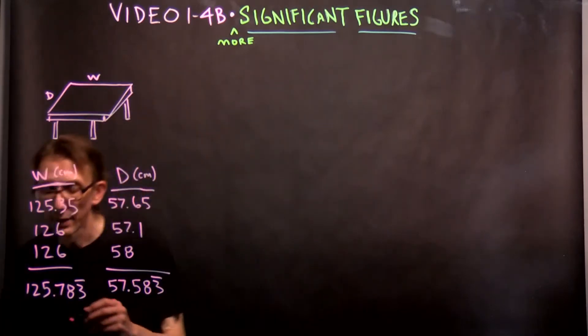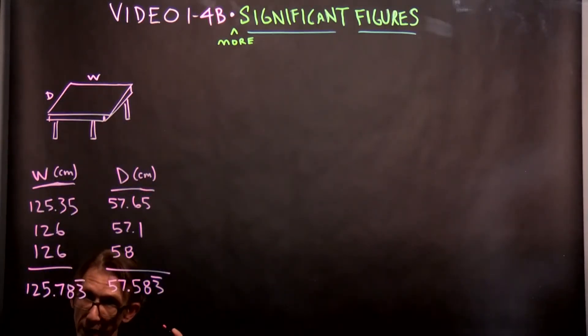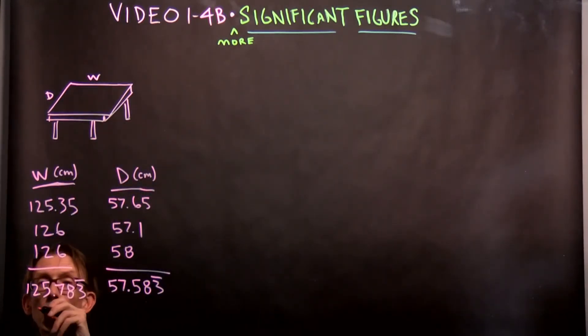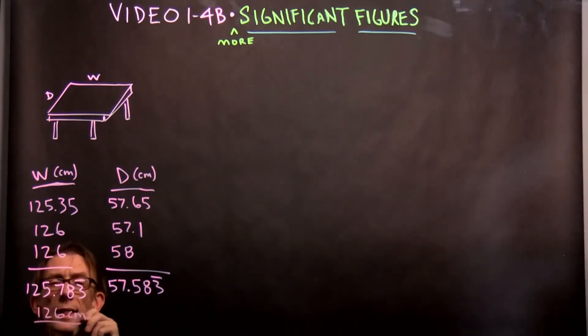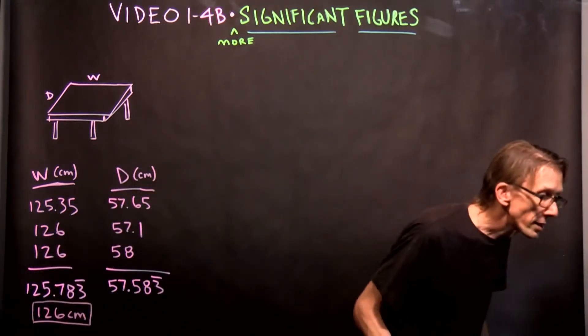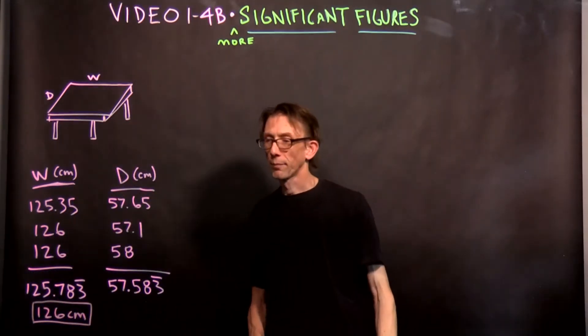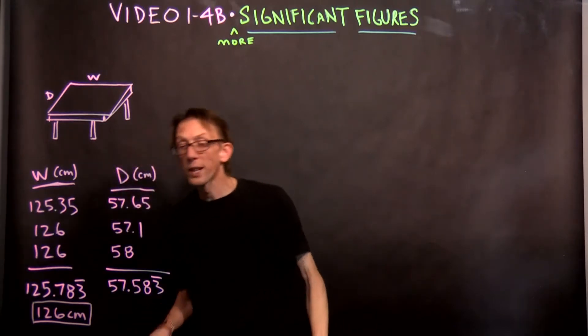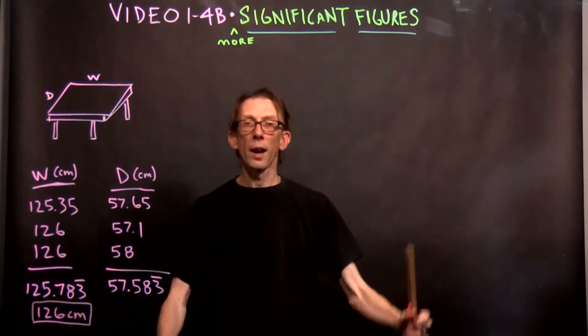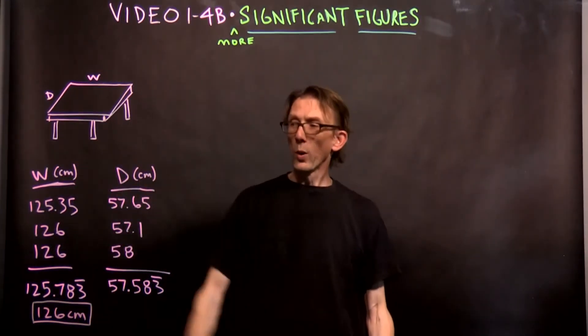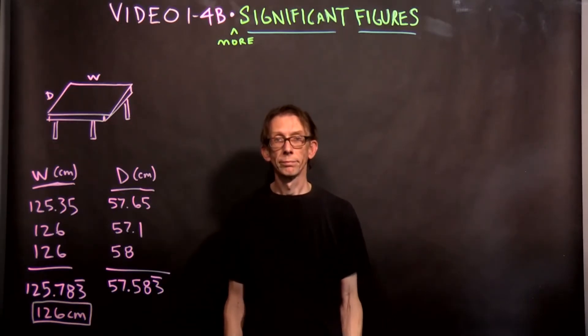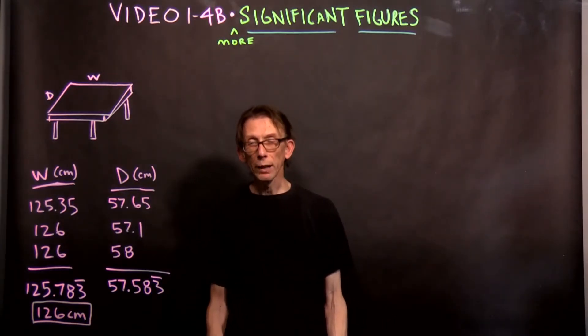126 and 126 are both three, so we have to cut this down to three significant figures. So the answer to the width, it's not 125.78333, it is 126 centimeters. And I think, I pray, that this will fit in the video. Yes, it fits down in the screen nicely. So that is the answer, it is 126. That is our classroom answer to the question, what's the width of the table? Got it? Right?